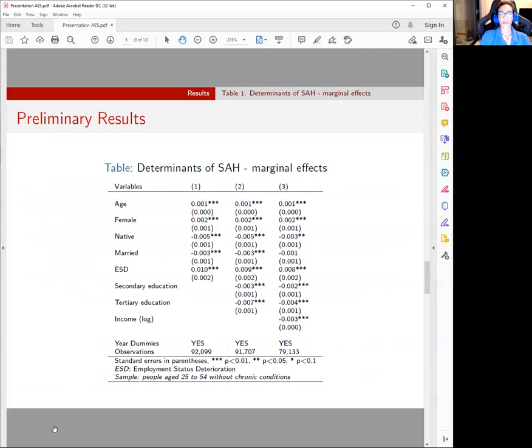Moving to the results of the analysis, we see in table one the estimates of the probit model. Most results are expected, and importantly, employment status deterioration is significant and positively associated with health deterioration, meaning that the ones that have experienced a deterioration in terms of their employment status are indeed more likely to experience health deterioration.